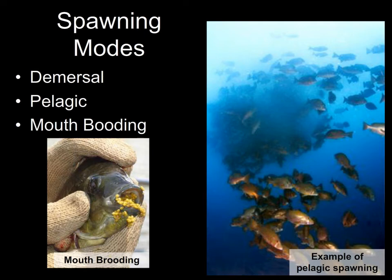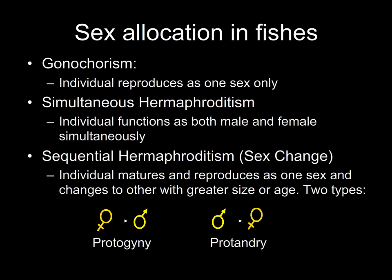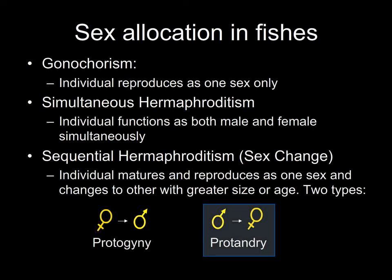Another strategy seen in some fishes is mouth brooding — the female lays eggs and either the male or female scoops up the fertilized eggs and keeps them in their mouth. We see this in things like cichlids, for example tilapia. This dramatically increases survivorship of the offspring, and makes mouth-brooding fish very good candidates for aquaculture, since it's much more likely we can get the fry or larvae through the stages necessary to grow to adults. It's much harder to culture coral reef fish with pelagic eggs and larvae — virtually impossible for some species. Most fish species that have been very successful in aquaculture are either demersal spawners or mouth brooders.